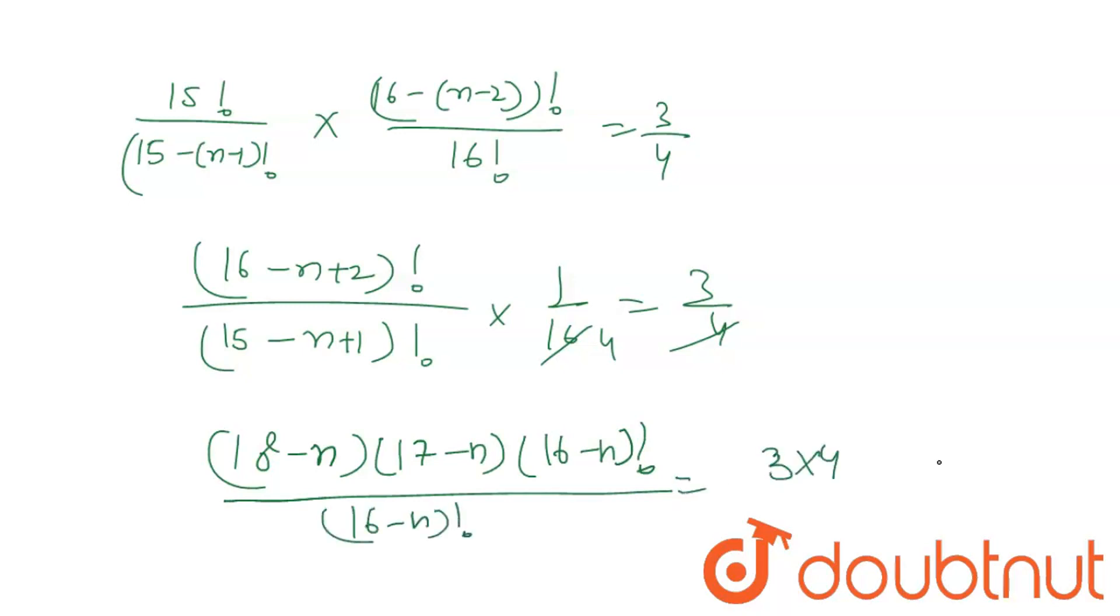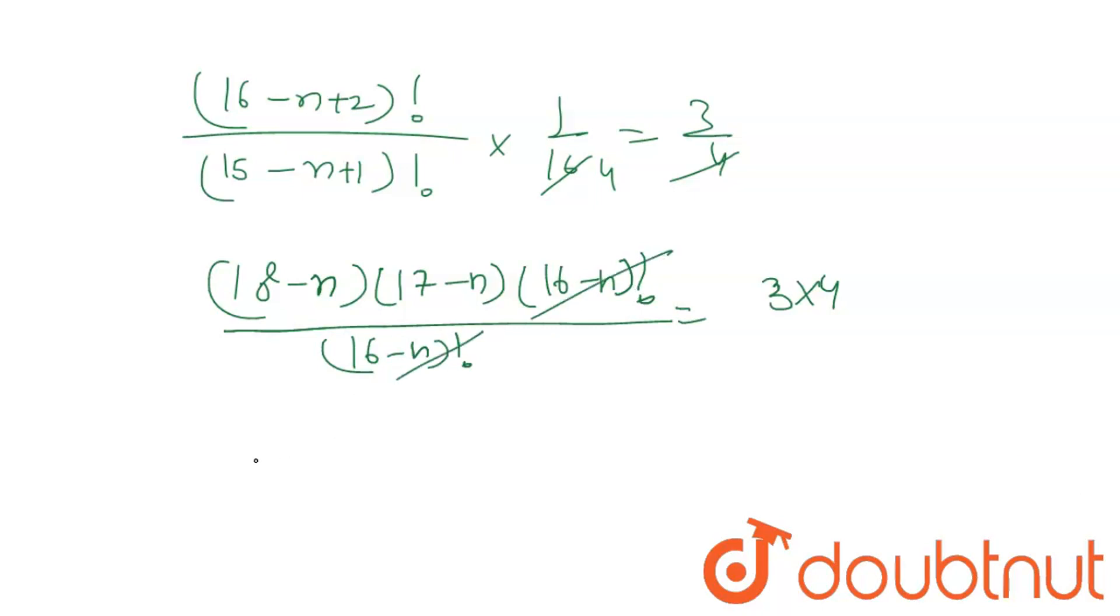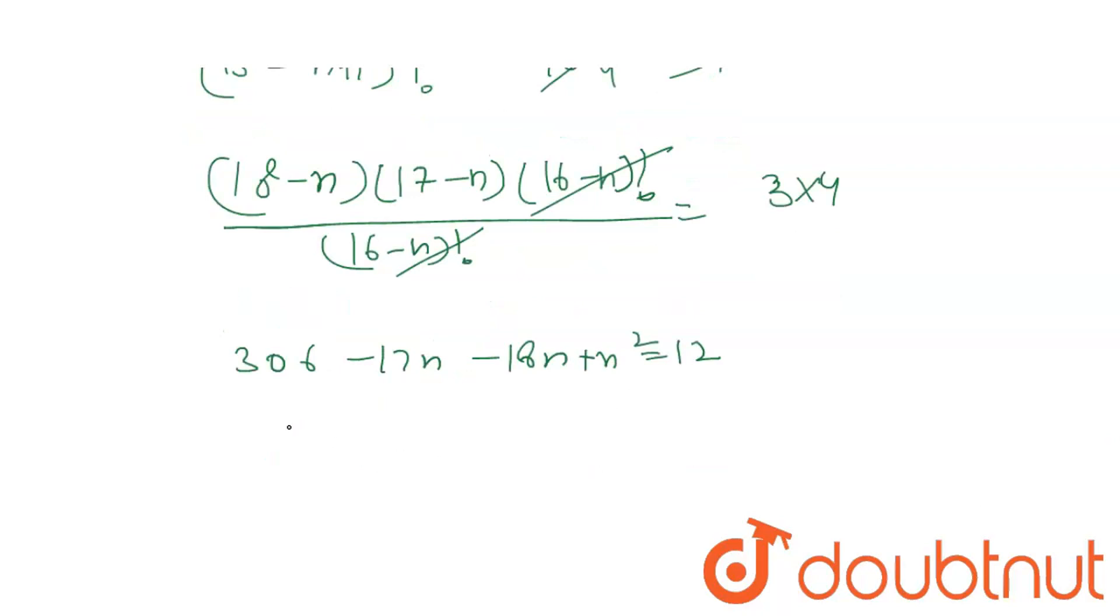So 3 into 4 is 12. Here cancel. So just a quadratic equation. 306 minus 17n minus 18n plus n squared equals 12. So final equation, n squared minus 35n plus 294 equals 0.